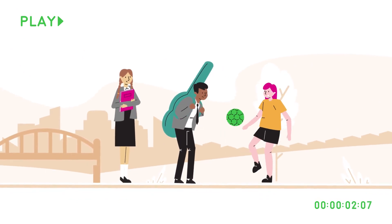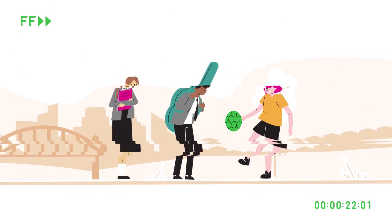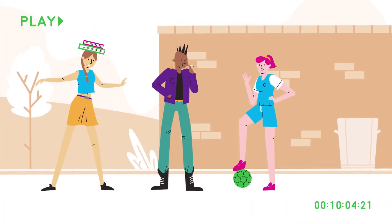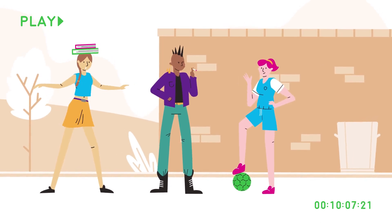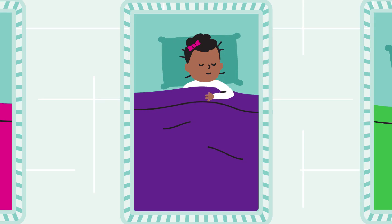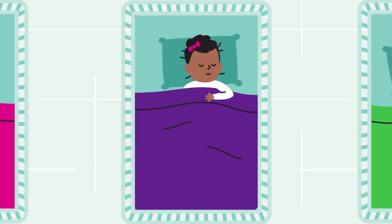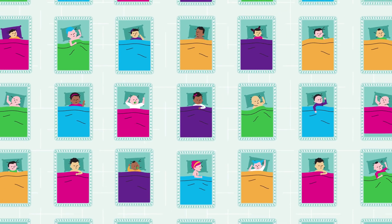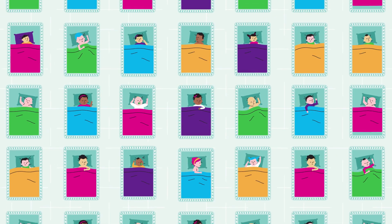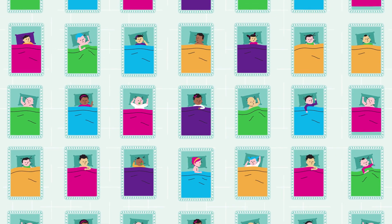Longitudinal studies follow the same groups of people over long periods of time to see how they change. There are various different types. Cohort studies chart the lives of people with shared characteristics. The most well-known are the UK's birth cohorts, which follow groups of people born within the same time period.